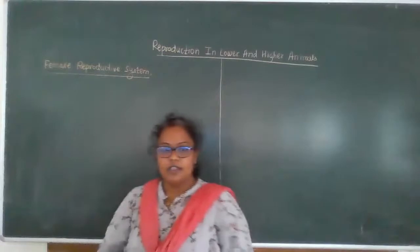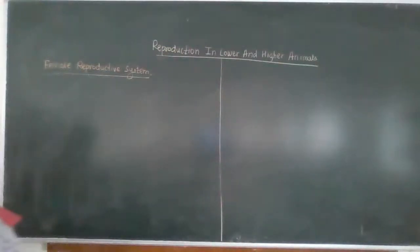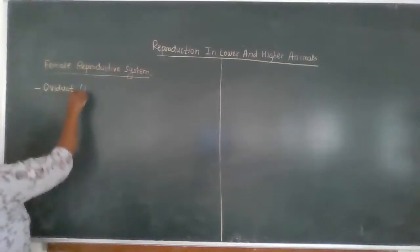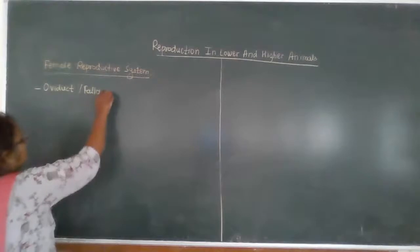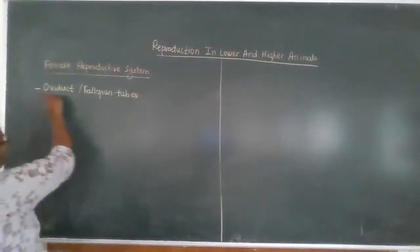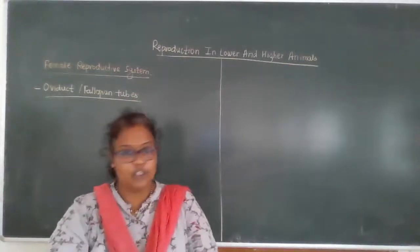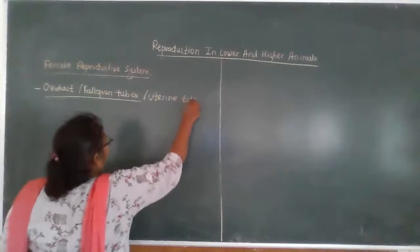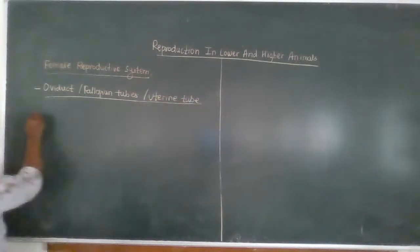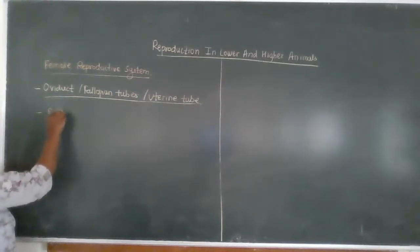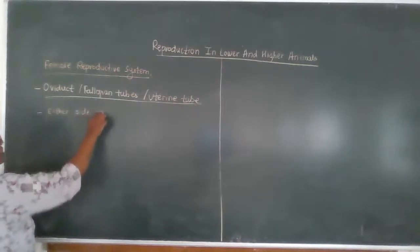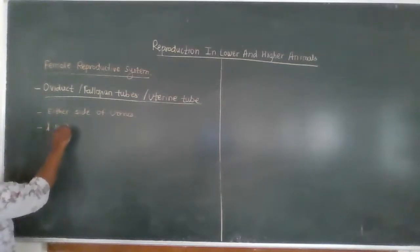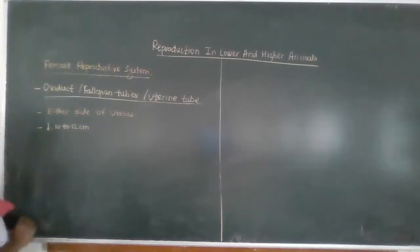Good morning everyone. Today we are going to start with the next point from the female reproductive system — that is the oviduct or the fallopian tubes, also called the uterine tube. These oviducts are present on either side of the uterus. Their length is about 10 to 12 centimeters.